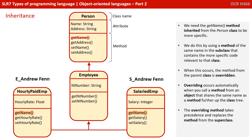Overriding occurs automatically when you call a method for an object that shares the same name as a method further up the class tree. The overriding method takes precedence and replaces the method from the superclass.